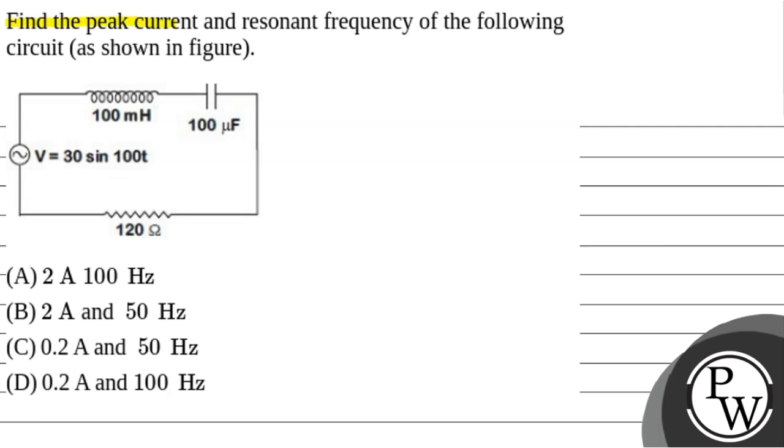Hello, let's read out the question first. Find the peak current and the resonant frequency of the following circuit. We have circuit data: inductance, capacitance and resistance. A series is connected to the AC source, 30 sin of 100 T. So we have to find the peak value of current and resonant frequency.